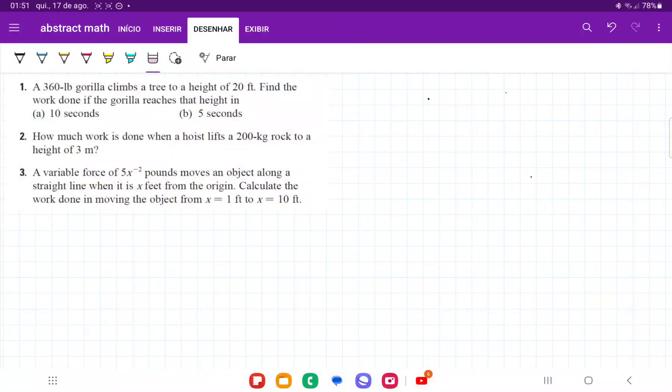So for number 3, they're giving us a variable force of 5 times x to the negative 2 pounds, which moves an object along a straight line when it is x feet from the origin. So it is telling us that this variable force depends on the distance from the origin.